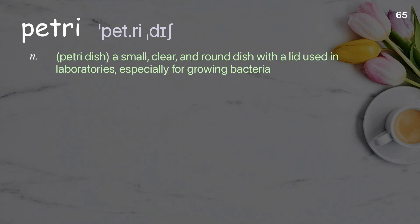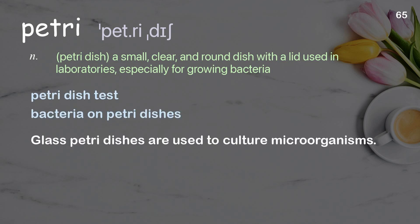Petri dish: a small, clear, and round dish with a lid used in laboratories, especially for growing bacteria. Examples: petri dish test; bacteria on petri dishes. Glass petri dishes are used to culture microorganisms.